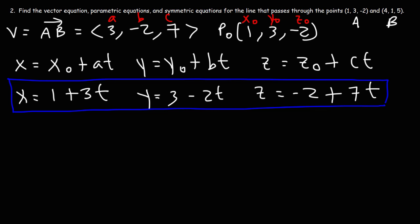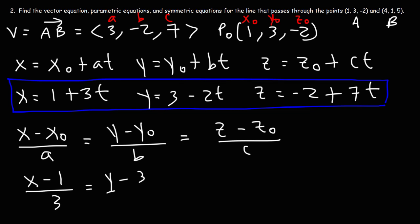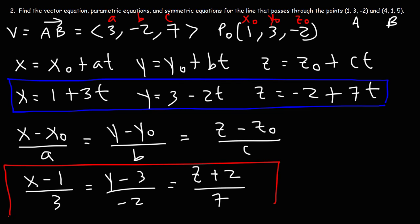For the symmetric equations, using (x minus x0)/a equals (y minus y0)/b equals (z minus z0)/c: x0=1, a=3, y0=3, b=negative 2, z0=negative 2 (so z minus negative 2 is z plus 2), c=7. The symmetric equations are (x minus 1)/3 equals (y minus 3)/(negative 2) equals (z plus 2)/7. That's it for this video — you now know how to find the vector, parametric, and symmetric equations for a line in three-dimensional space.